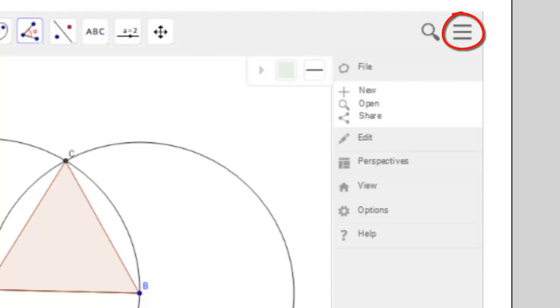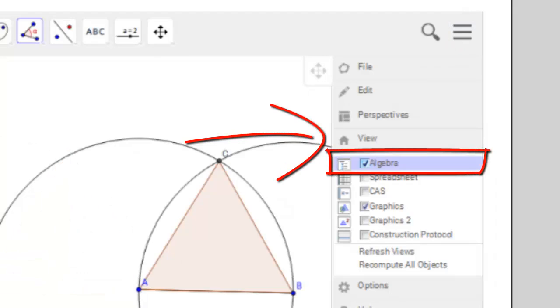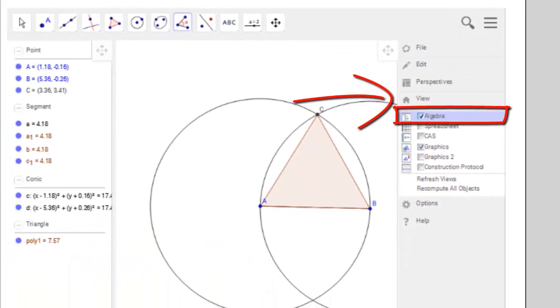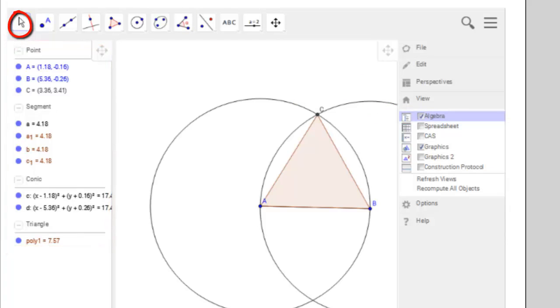First access the side menu and select View and Algebra in order to bring up the on-page coordinates. To focus only on the image coordinates that you wish to measure, we can simply delete the other coordinates on the page.